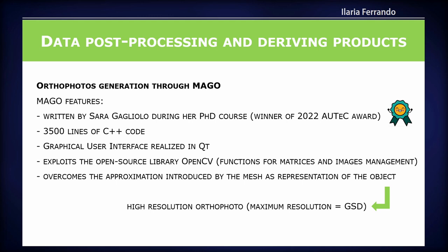Concerning the orthophoto generation, we used MAGO, developed by my colleague Sara Gagliolo during her PhD. I want to acknowledge that she is the winner of the Outek Prize in 2022 for this work — congratulations to Sara. The code is more than 3000 lines of C++, has a simple graphical user interface realized in Qt, and exploits the open source library OpenCV for matrix and image management. The main feature of MAGO is that it overcomes the approximation typically introduced by a mesh as a representation of the object, producing high resolution orthophotos with maximum resolution equal to the ground sample distance.